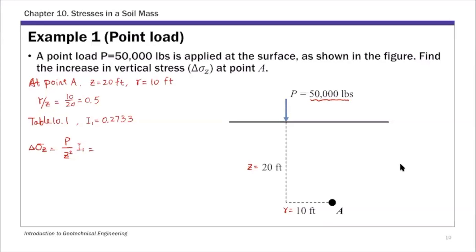P is 50,000 pounds. Depth Z is 20, so Z squared is 20 squared. That's 20 squared times I1, which we just looked up from table 10.1, 0.2733. That will give you the stress increase at point A, which is 34.2 psf.